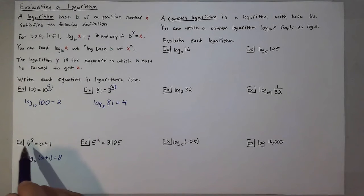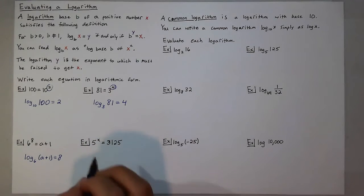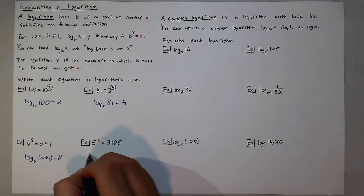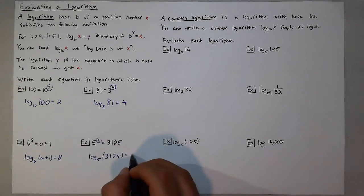You'll often notice that the base of the exponential expression is also the base of your logarithmic expression. And with 5 to the x, this can be rewritten as log base 5 of 3,125 is equal to your exponent, x.